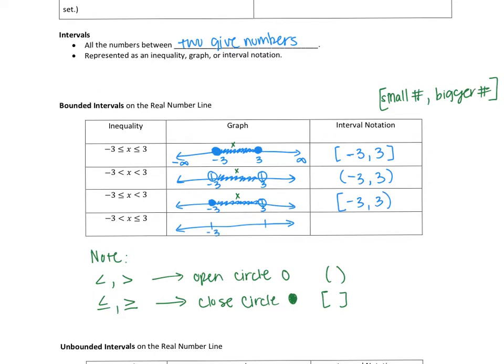Last but not least — you probably get the gist by now. I need an open circle on negative three since that inequality sign doesn't have a line, but I do have a line on positive three, so I need a closed circle there. I shade in between again to represent my x values. So the interval notation is a parenthesis first, then a bracket: (-3, 3]. And there we go — bounded intervals in three representations: an inequality, a graph, and interval notation.